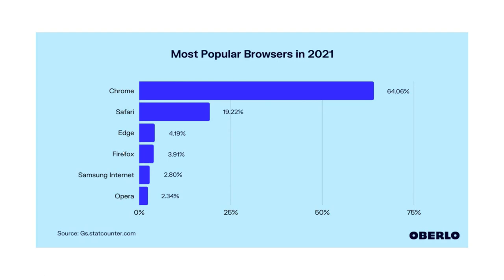According to a survey taken in 2021, the six most popular internet browsers were Google Chrome, Safari which is found on Macintosh machines, Microsoft Edge formerly known as Internet Explorer, Firefox, Samsung Internet, and Opera. Each of these platforms has their own way of tracking user-related activity. In this lecture, we'll focus on the forensic artifacts that can be found on Chrome and Firefox browsers.